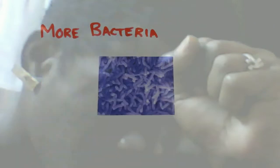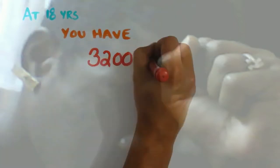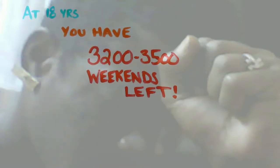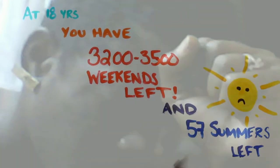All the while, there are more bacterial cells in your body than actual somatic body cells. And if you've made it to age 18, you have, on average, 3,200 to 3,500 weekends left in your lifetime. More importantly, you only have about 57 summers left.